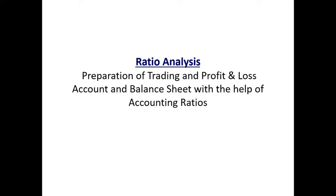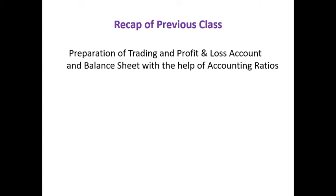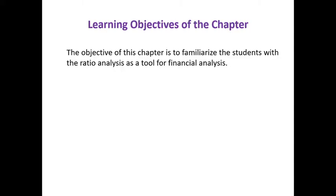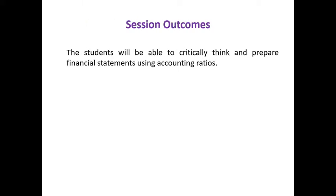In the problem, some ratios and some information will be given. With the help of those accounting ratios and other information, we need to prepare the trading and profit and loss account and balance sheet. The main objective of this chapter is to familiarize students with ratio analysis as a tool for financial analysis. The session outcome is that students will be able to critically think and prepare financial statements using accounting ratios.